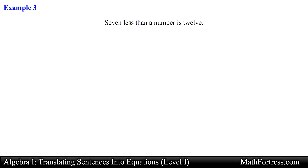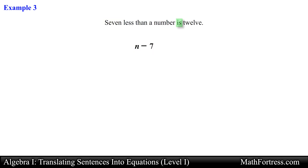Next example: '7 less than a number is 12.' We have the key word 'less,' so we have a subtraction. Notice the phrase is 'less than' — be careful with subtraction operators, as you can't always translate the expression in order. For this example, '7 less than a number' is written as n minus 7. We see the key word 'is,' so we insert an equal sign, and finally include 12. The final equation is n minus 7 equals 12.